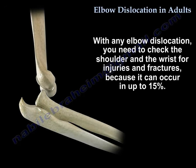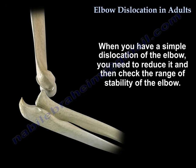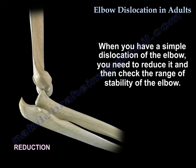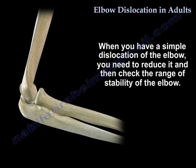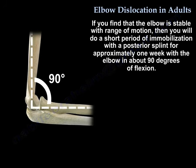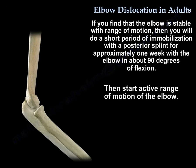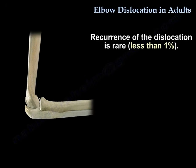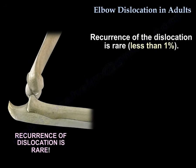With any elbow dislocation, you need to check the shoulder and the rest for injuries and fractures, as associated injuries can occur in up to 15 percent. When you have a simple dislocation, reduce it and then check the range of stability. If the elbow is stable with range of motion, do a short period of immobilization with a posterior splint for approximately one week with the elbow in about 90 degrees of flexion, then start active range of motion.